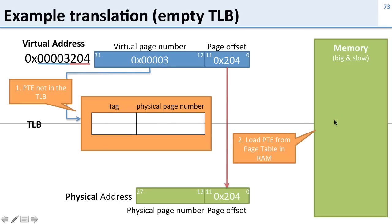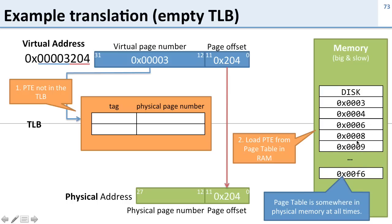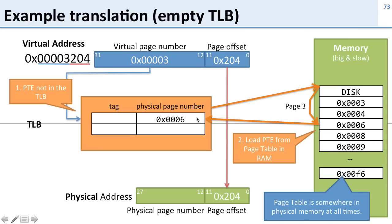Now we need to go look up in our page table in order to get the translation. We're going to have to load from main memory to get our page table. Remember, the page table has to stay in main memory all the time, or we'll never be able to access anything. We look up virtual page 3 in our page table and find the physical page number we need. We fill this into our TLB — the tag is 3 and the physical page is 6, because virtual page 3 maps to physical page 6.